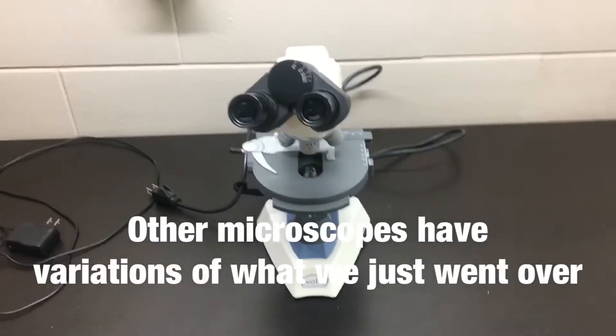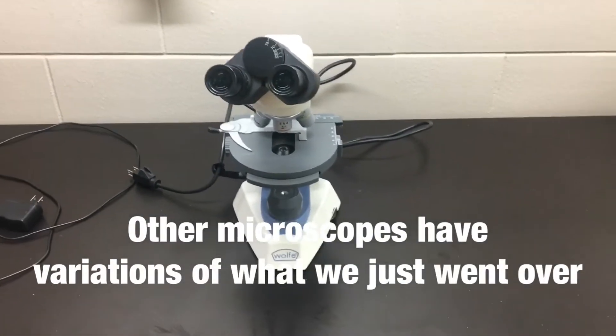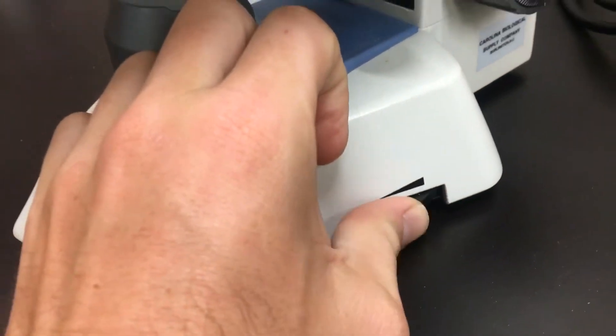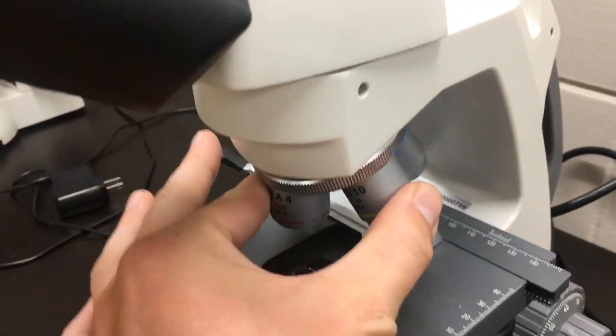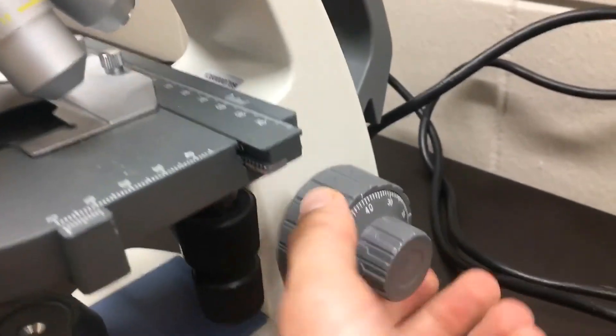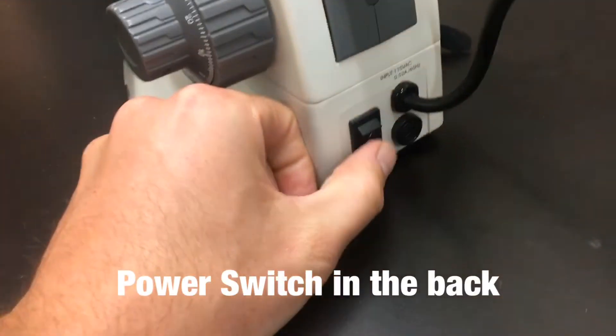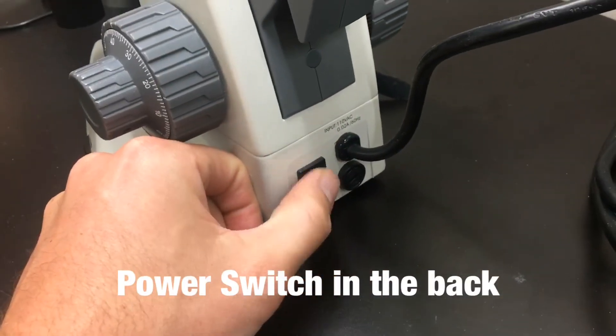Some microscopes are designed a little differently. They still have the knobs, objectives, focuses, but the on switch is all the way in the back.